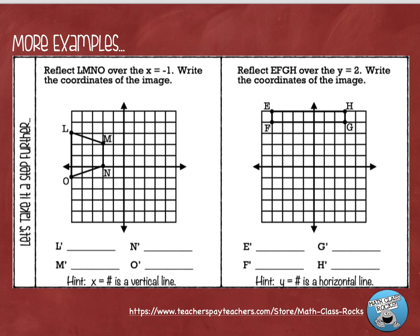Now let's move on and reflect over some different lines. This time they want us to reflect figure LMNO over the line x equals negative one, and write the coordinates of that image. Whenever you have an x equals equation, that is a vertical line. So x equals negative one is going to be a vertical line at negative one. Let's highlight that line first — here's negative one on the x-axis, and I'm going to draw a vertical line right at that point.